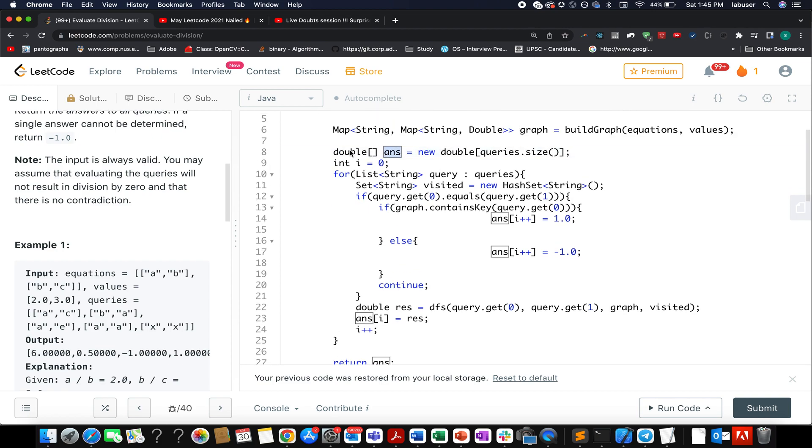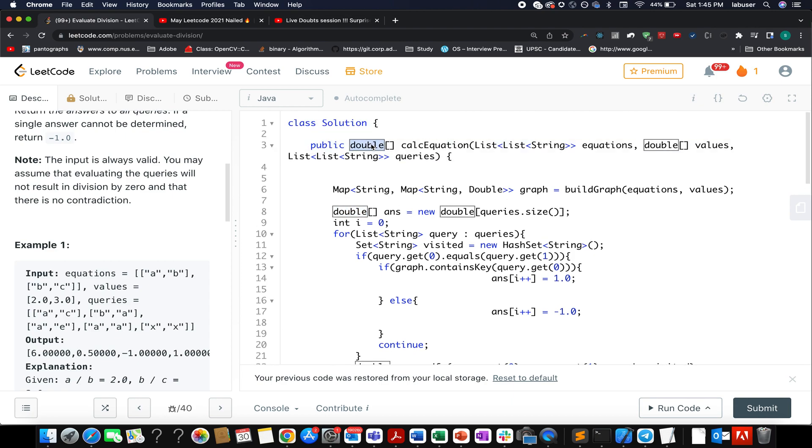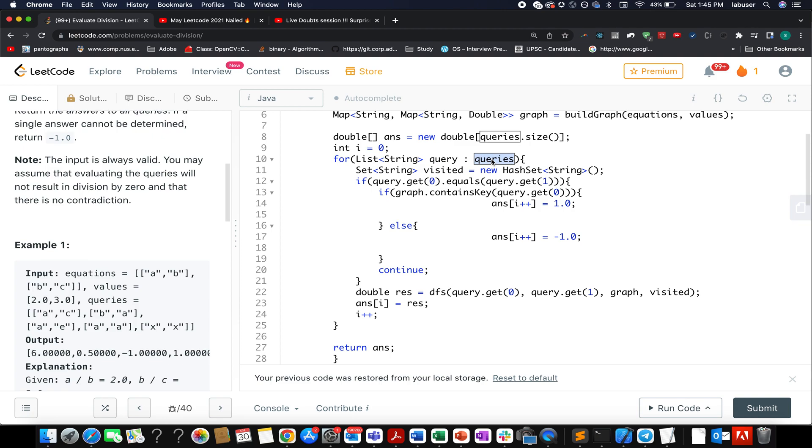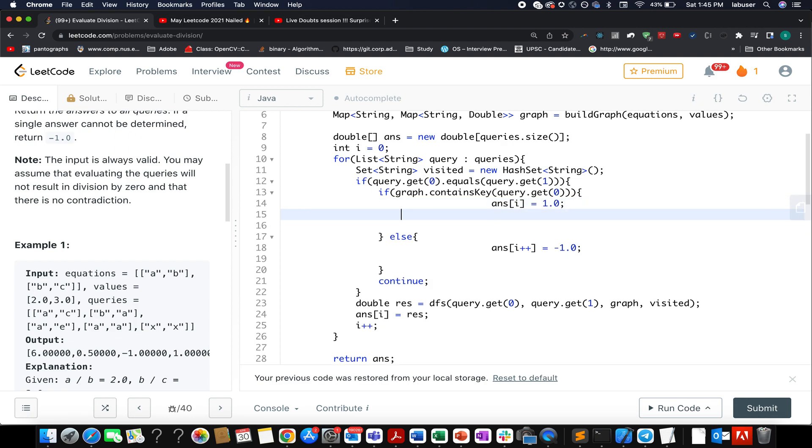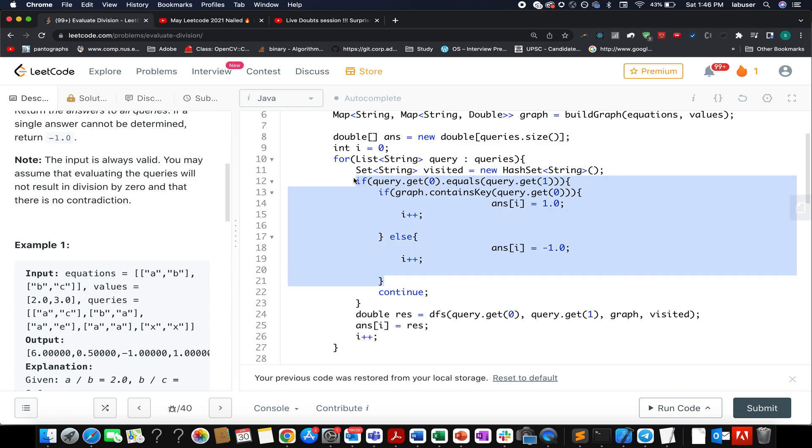Now I've created the answer array of return type double. Then we start traversing over the queries. I've created a visited set for the DFS traversal. I check whether my source equals my target value. If that's the case, I check whether my graph contains the source. If it does, the answer for this part would be 1 and I increment i. If my graph doesn't contain the source, that means you cannot find that value in your graph. Return -1 in those cases.